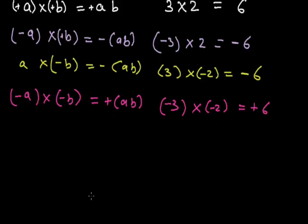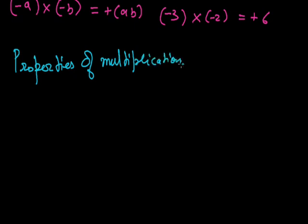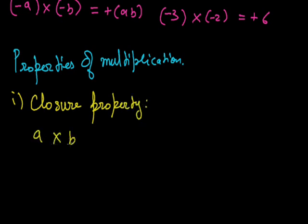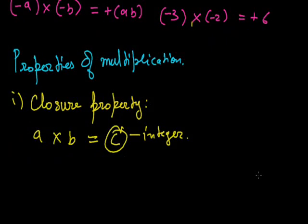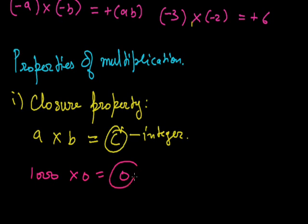Now let us see the properties of multiplication. The first is the closure property. Closure property says if A and B are two integers and I multiply them to get C, then C will also be an integer. For example, 3 and 2 give 6; minus 3 and 2 give minus 6; 2 and minus 2 give minus 4 — all integers, regardless of sign. If we multiply any number by 0, we get 0, and 0 is also an integer.